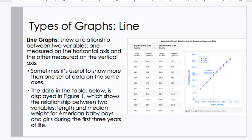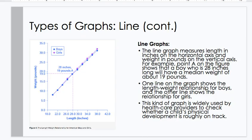Types of graphs. Line. Line graphs show a relationship between two variables, one measured on the horizontal axis and the other measured on the vertical axis. Sometimes, it's useful to show more than one set of data on the same axes. The data in the table below is displayed in figure 1, which shows the relationship between two variables, length and median weight for American baby boys and girls during the first three years of life. And you can see it's a positive upward sloping line, boys and girls. The line graph measures the length in inches on the horizontal axis and weight in pounds on the vertical axis. So, for example, point A on the figure shows that a boy who is 28 inches long will have a median weight of about 19 pounds. So, read over from 28, go up, find it on the line, and then go to the left and see 19 pounds. One line on the graph shows the length-weight relationship for boys, and the other shows the relationship for girls. This kind of graph is widely used by health care providers to check whether a child's physical development is roughly on track.